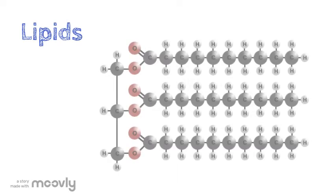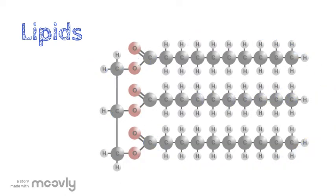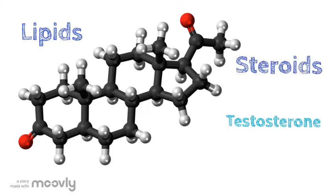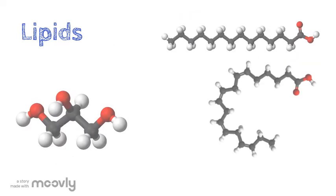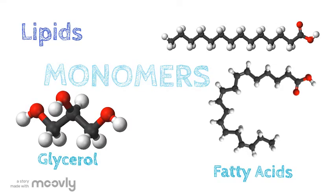Lipids are primarily made of fatty acids and glycerol. Fatty acids hate water, which is why oil and water don't mix. There are lipids that are made out of carbon rings, such as steroids, including testosterone, estrogen, and cholesterol. However, most lipid-containing foods are made of fatty acids and glycerol. Fatty acids and glycerol are the monomers of lipids.